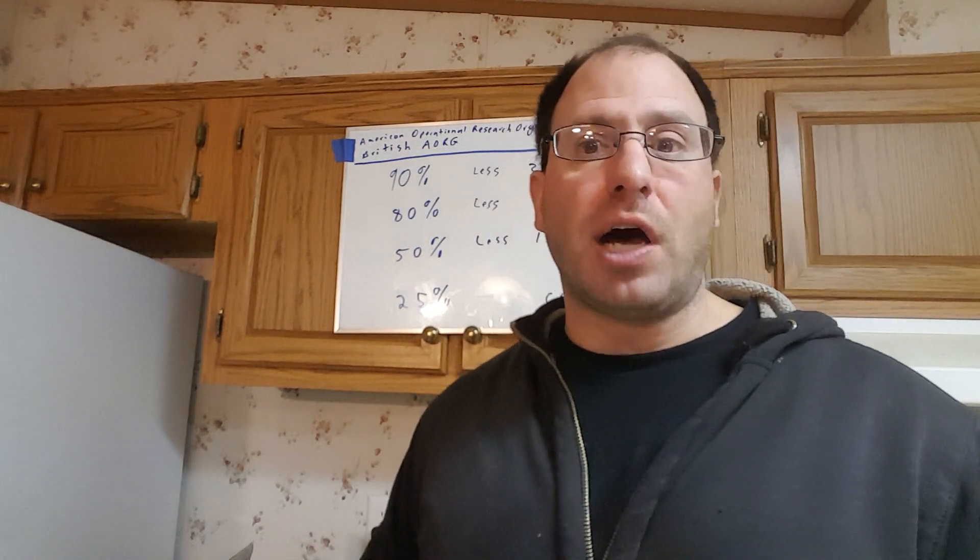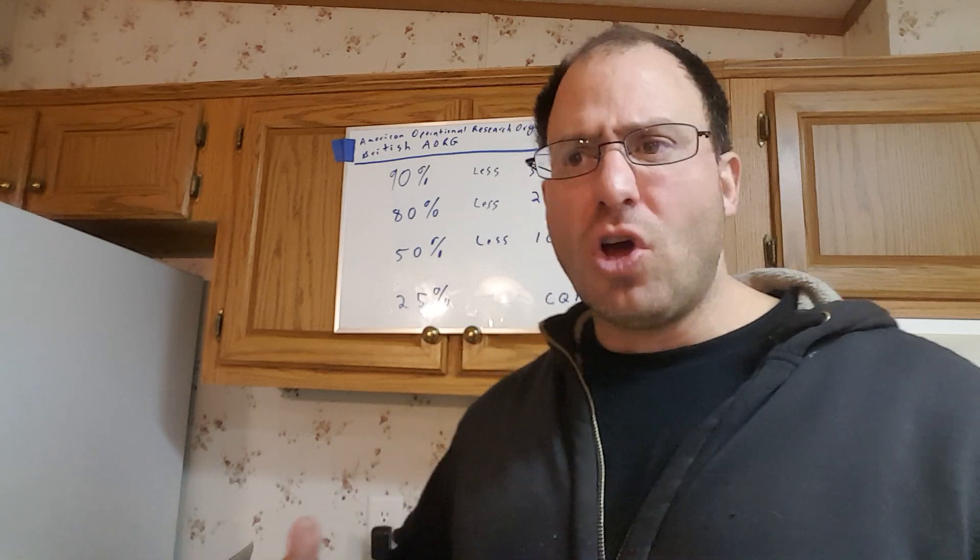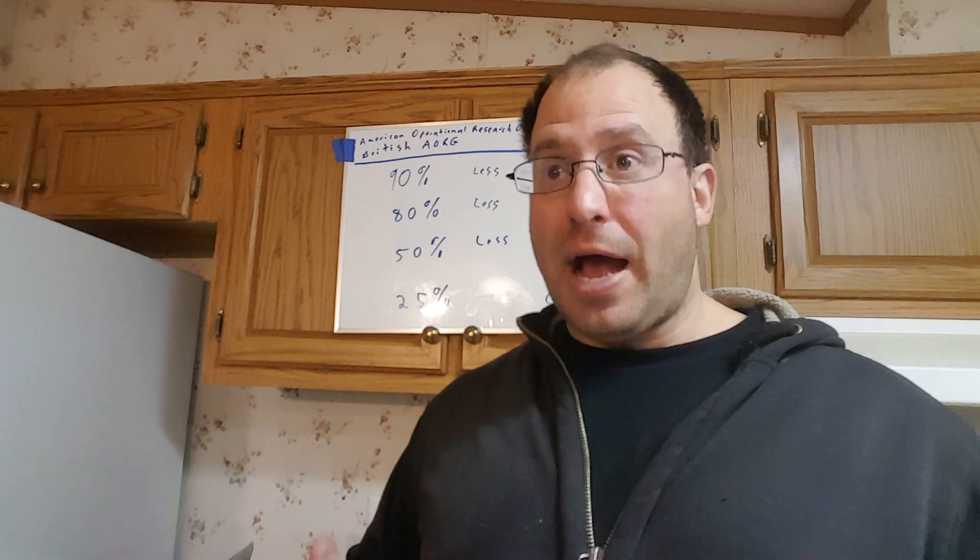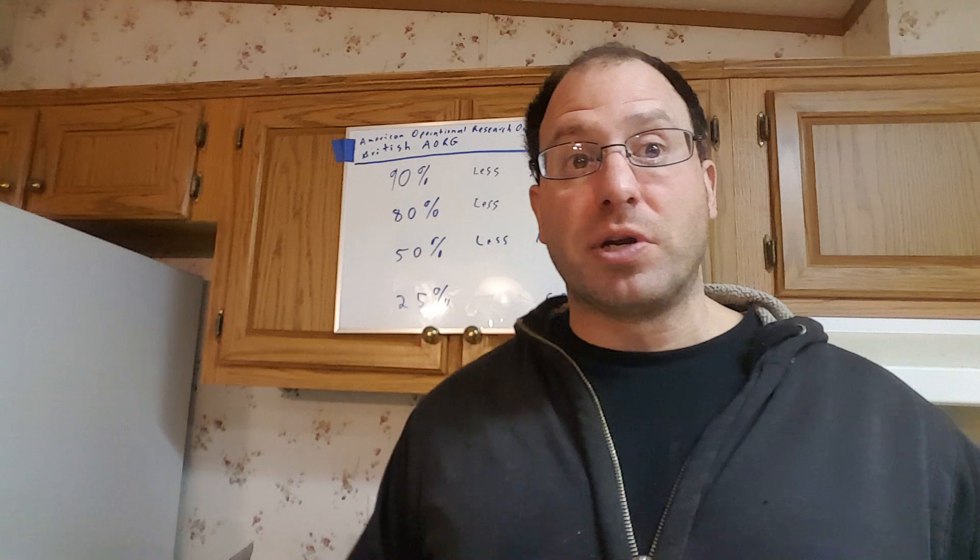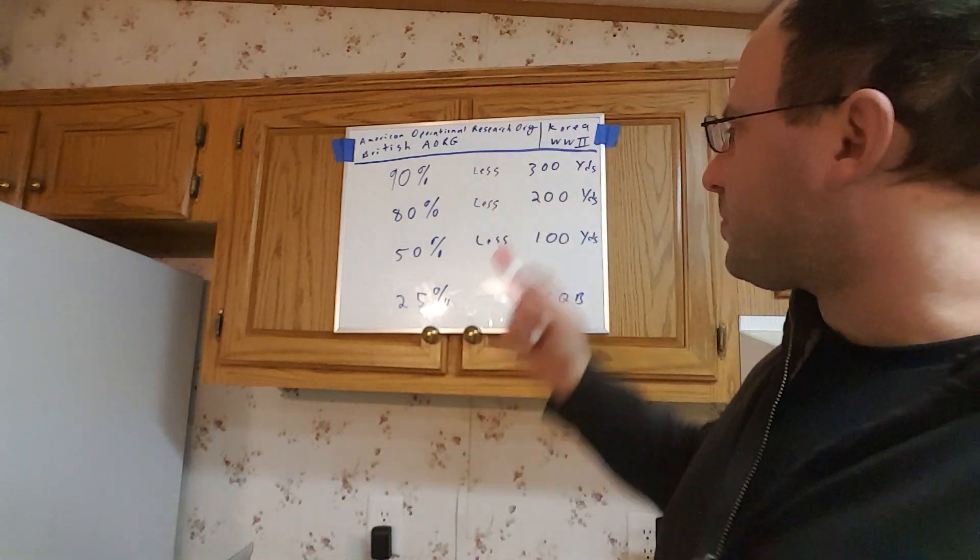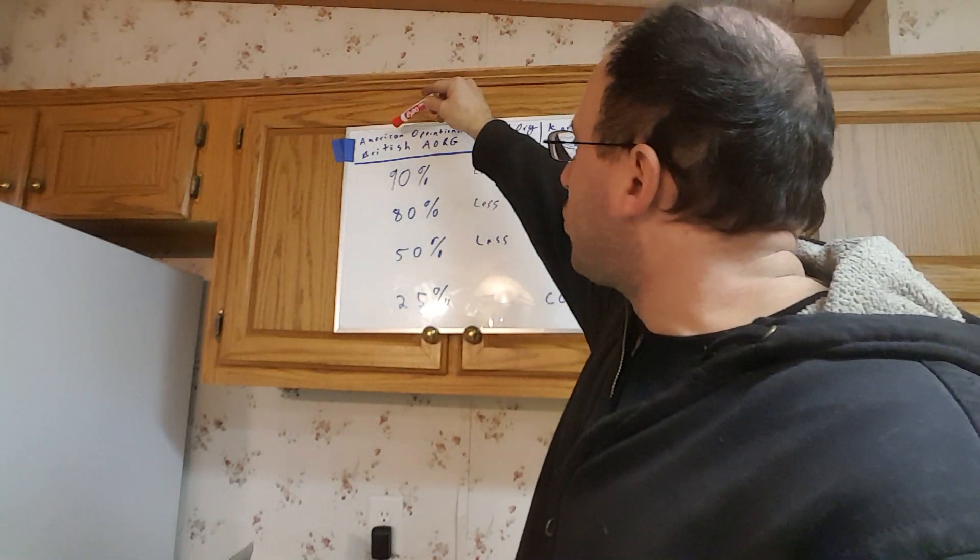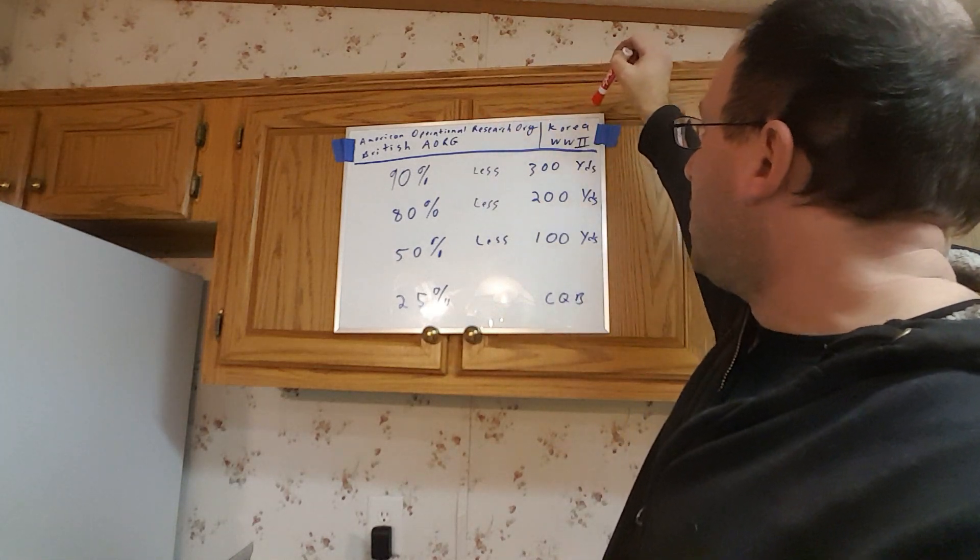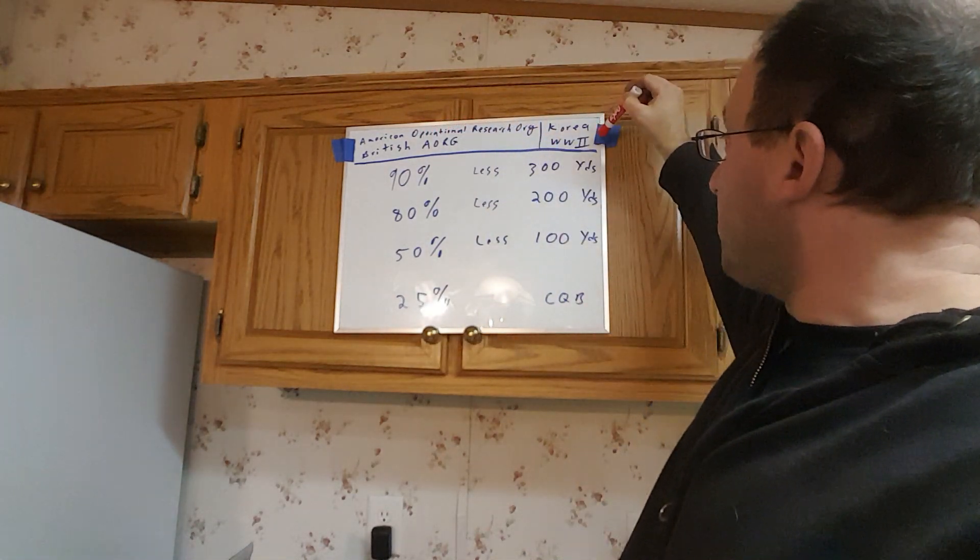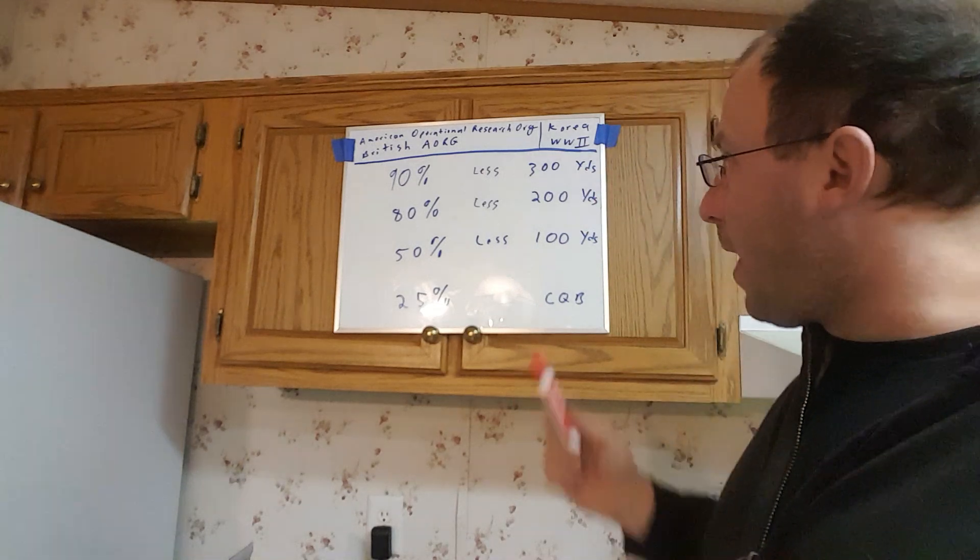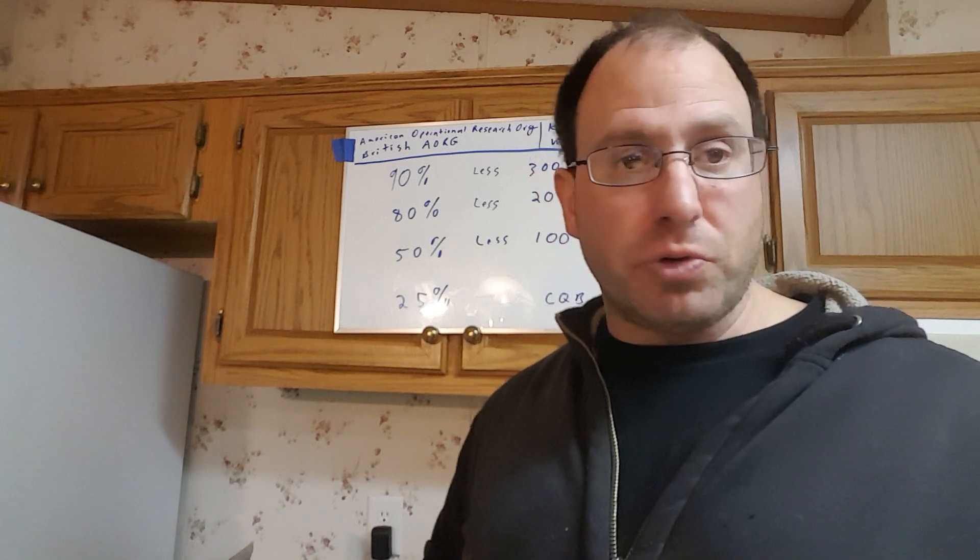I've done a couple of videos on this alternate reality and today I'm going to be talking about expected engagement distances. What distances do we expect to be actually fighting the Soviets at. This is going to be very important in choosing what type of equipment we're going to be taking out. So what I did is I collected some data over here. The two sources are the American operational research organization. They collected some data from the Korean War and the other one is the British AORG. They collected some information from World War Two and this is specifically engagements between soldiers with rifles.